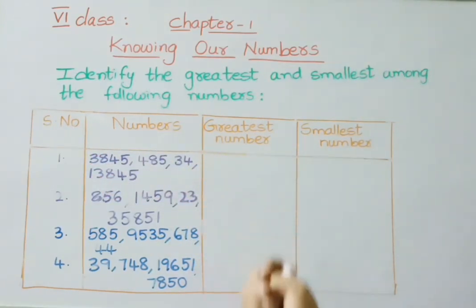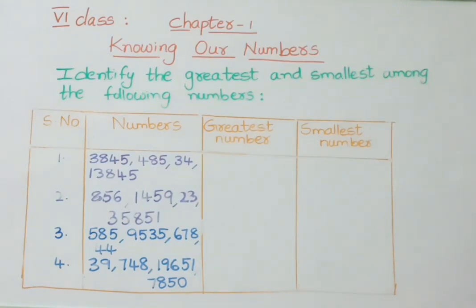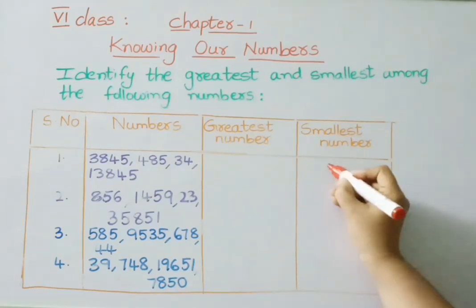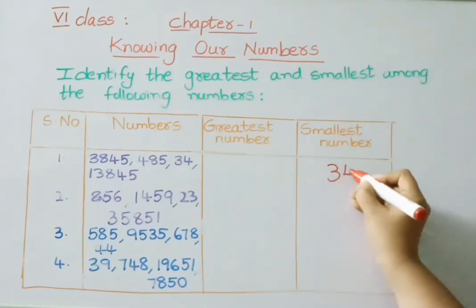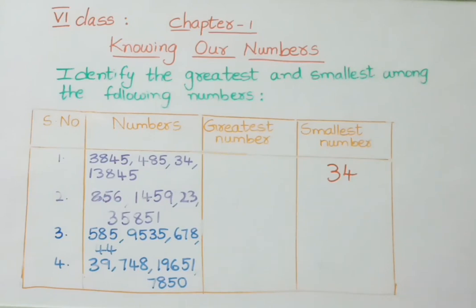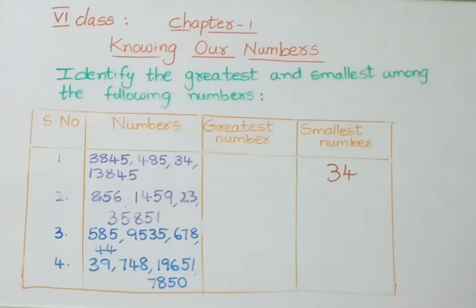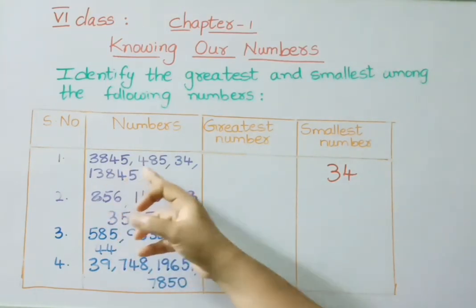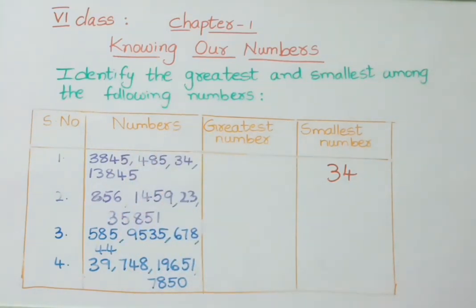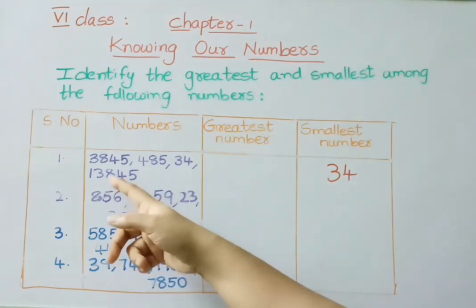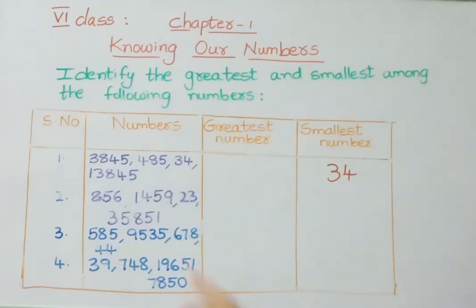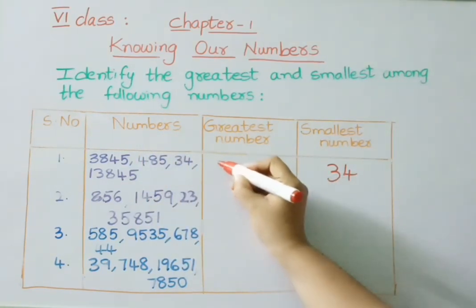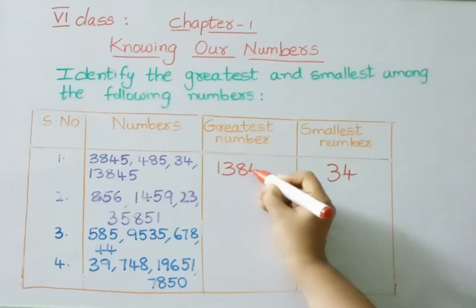Here the 2-digit number 34 is the least among all the numbers, so the smallest number is 34. Now see the remaining numbers: the next 3-digit number is 485, next is 3,845 which is a 4-digit number, and the last number 13,845 is a 5-digit number. So the 5-digit number is greater, therefore the greatest number is 13,845.